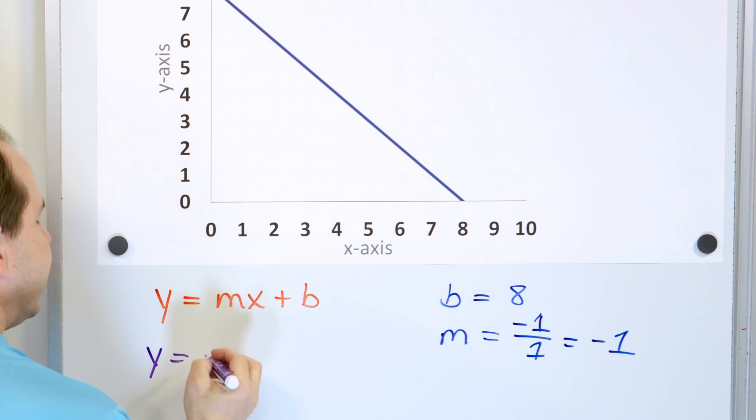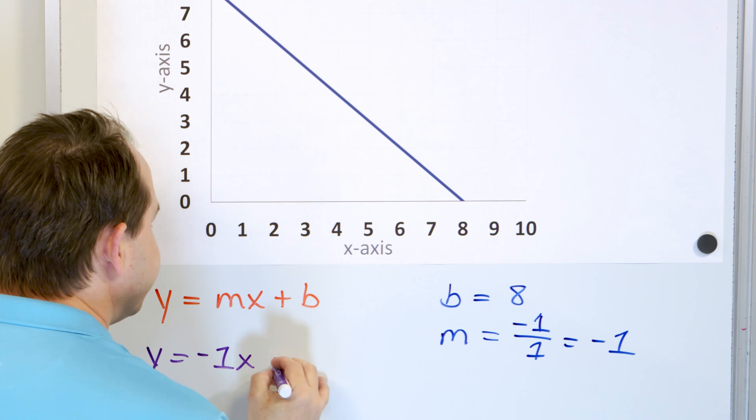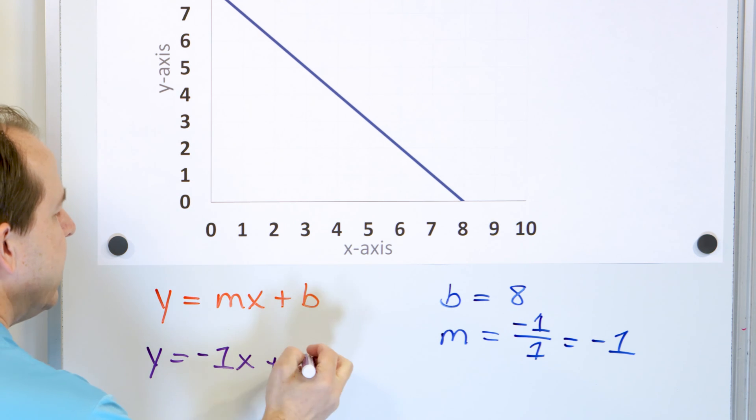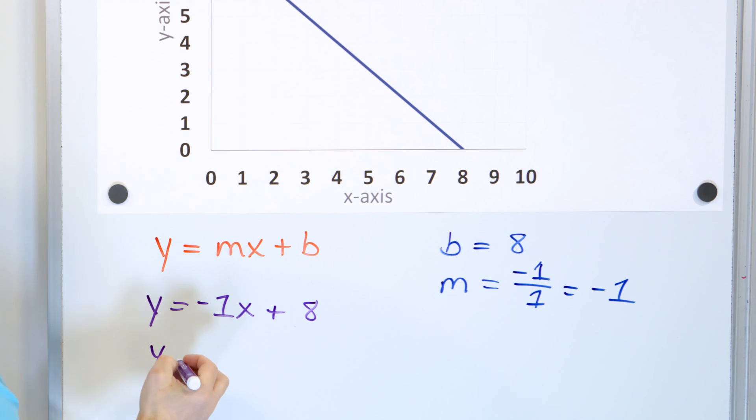m, we now know, is negative 1 times x plus b, but b is 8. Now, we can leave it like this. That's fine because it is very clear that the slope is negative 1 times x plus 8.